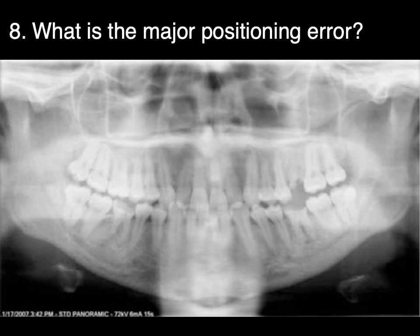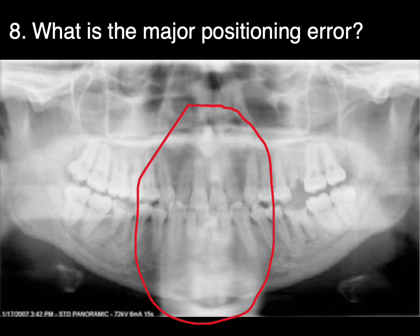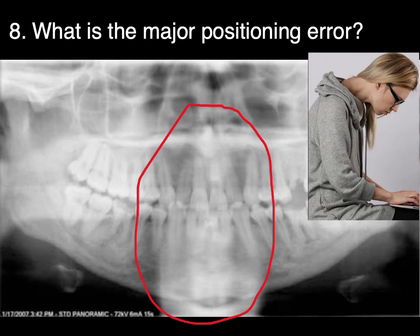Let's do one more. What's the major positioning error? This one's a little tougher. What I want to point out is this accentuated spinal shadow — this was somebody who was slumped. If you're slumped when you take a pan, there is more spine that's going to go through. If somebody was in that head position, there'd be all sorts of other errors too. You can imagine there'd be more spine to go through, so you're going to see more spine on the film.